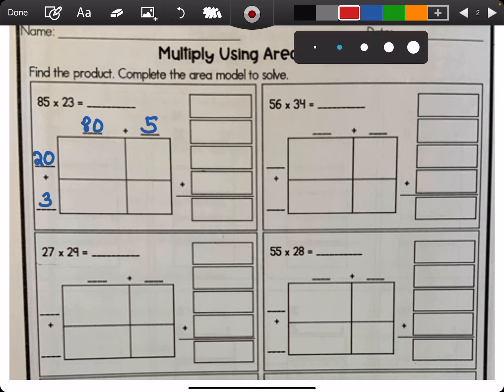So this first box is 80 times 20. 8 times 2 is 16, and bring the two zeros over. Then we have the 80 times 3. So picture yourself in the center of the box, shoot to the top, that's one factor, and shoot to the side is another factor. So 80 times 3 will be, well, 8 times 3 is 24. Bring the zero, and that's 240.